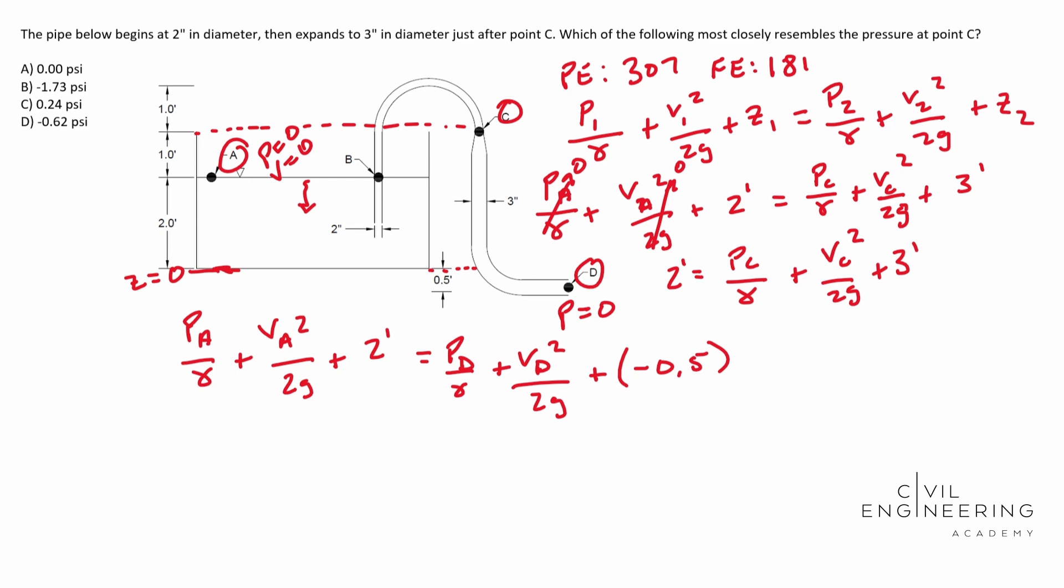So canceling out our pressures, cause we know that's zero, that's zero, and this is zero. You end up with two equals VD squared over 2g. And this guy is going to be minus 0.5. So whenever you solve for our VD, you should end up with 12.69 feet per second.